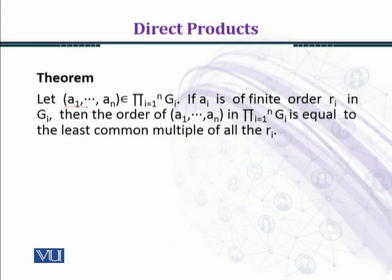Let (a1, a2, ..., an) be an n-tuple belonging to the direct product of groups G_i for i = 1 to n. If a_i is of finite order r_i in G_i, then the order of the element (a1, ..., an) in the direct product of G_i for i = 1 to n is equal to the least common multiple of all the r_i.